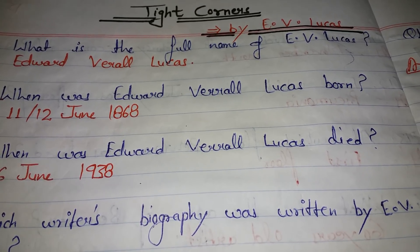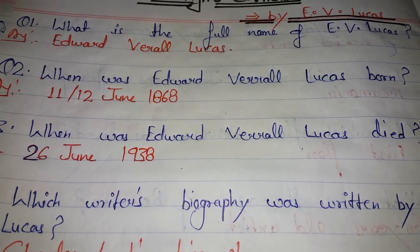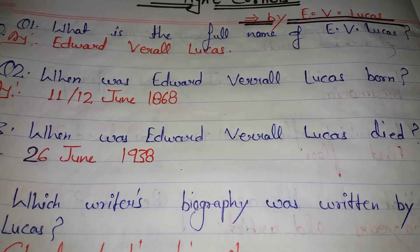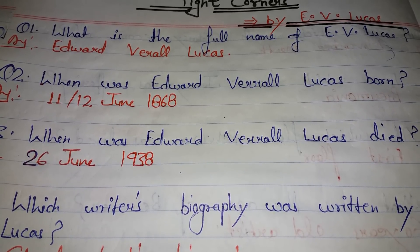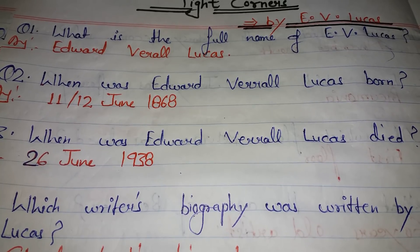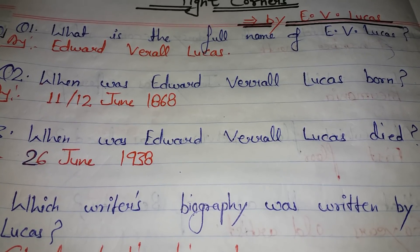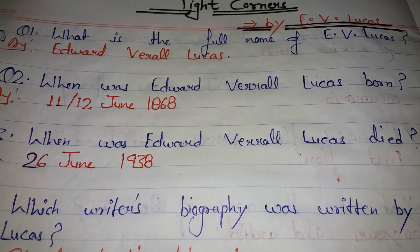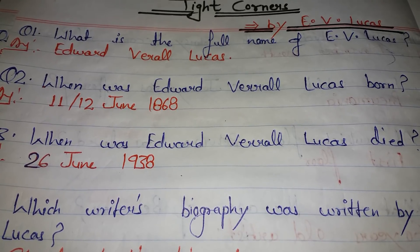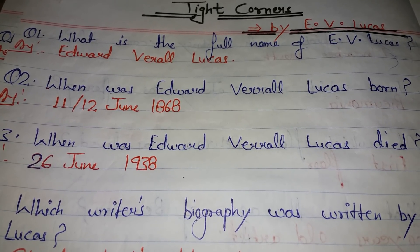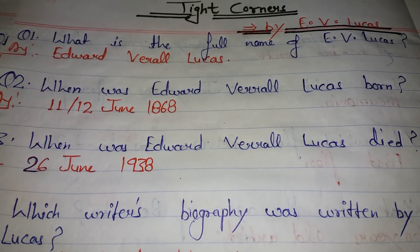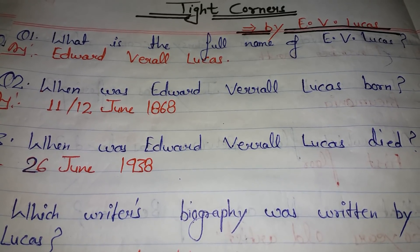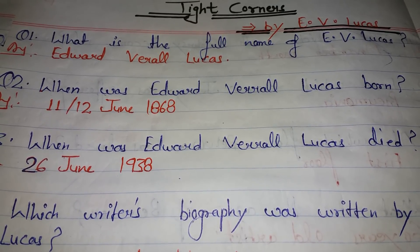What is the full name of E.V. Lucas? Edward Verrall Lucas is the full name of E.V. Lucas. Next question: when was Edward Verrall Lucas born? He was born on 11 or 12 June 1868.